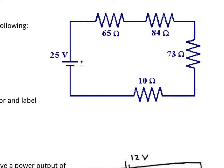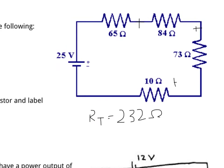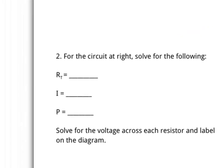In problem number 2, we have a similar setup with a known voltage of 25 volts and four individual resistors, again wired in series. The first thing we're asked to do is figure out the total resistance. Adding all of them together: 65 plus 84 plus 73 plus 10 gives us a total resistance of 232 ohms.